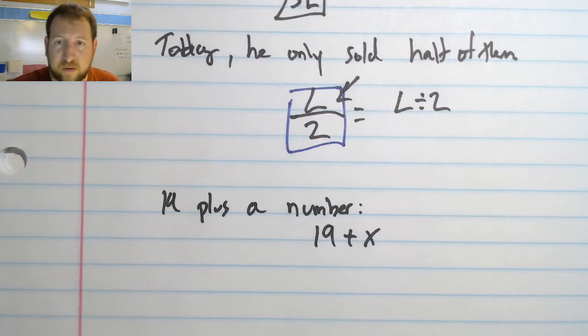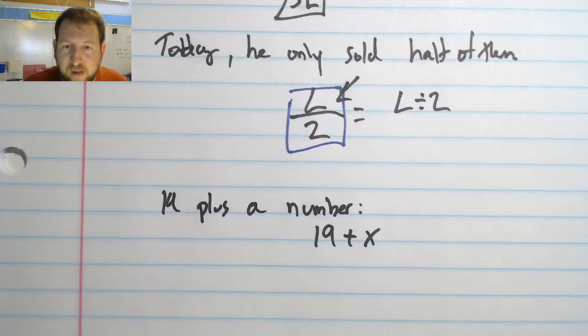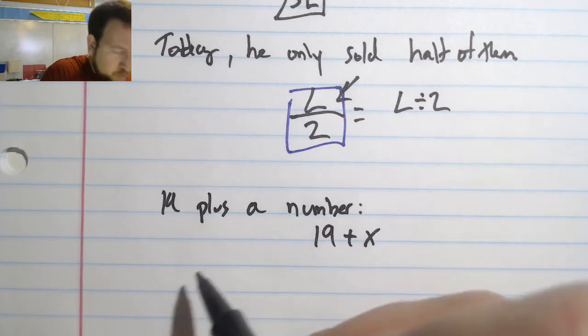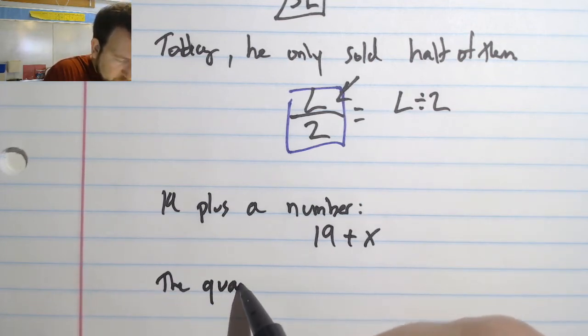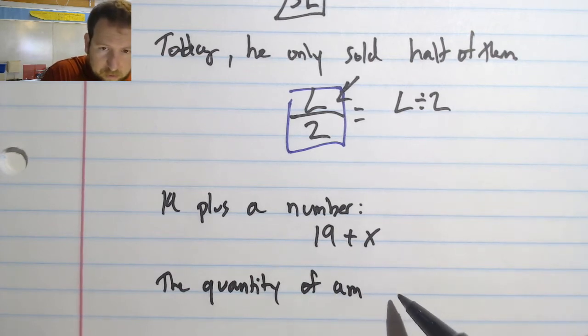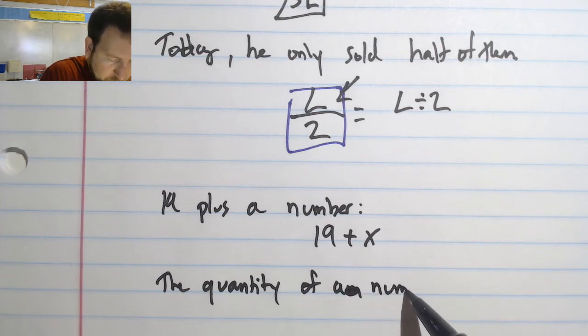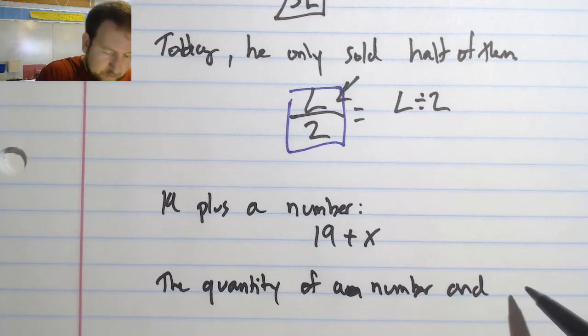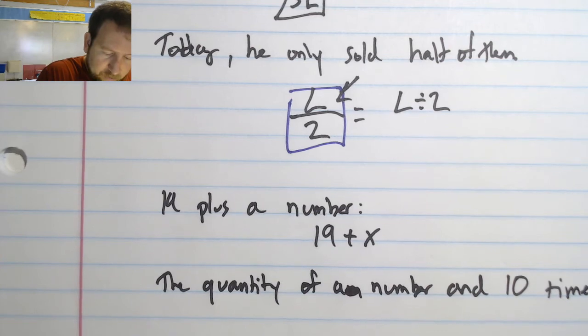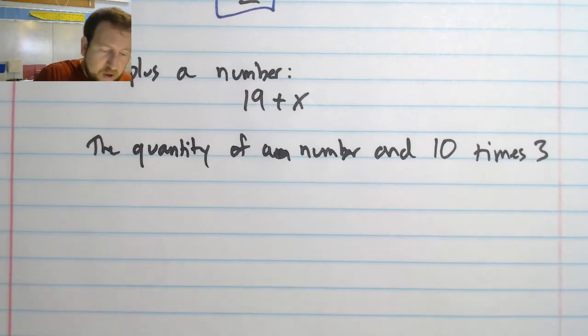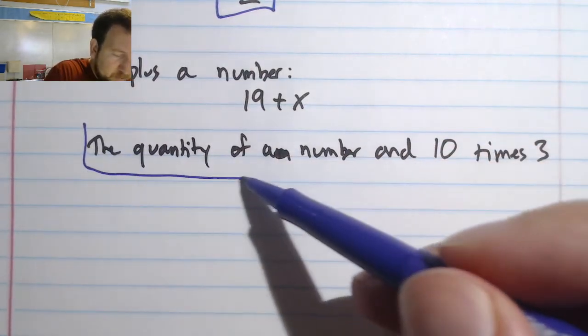One other term that they're going to use is this: it might say the quantity of a number and 10 times 3. Now this term might be new to us—this quantity of a number and 10.